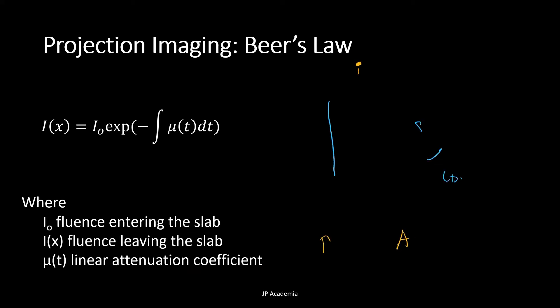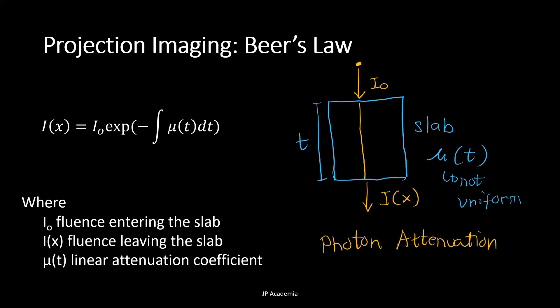Let us consider a slab of, let's say, soft tissue with a thickness of T in terms of centimeter. Then the attenuation of the primary beam can be expressed using the Beer's formula. Your I-not here refers to the fluence entering the slab, so this one. Then we have I as a function of X which is the fluence leaving the slab, or the attenuated intensity. Then we have mu which is the linear attenuation coefficient of our material.